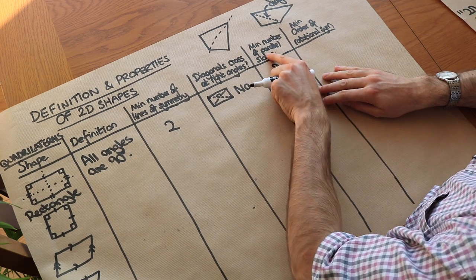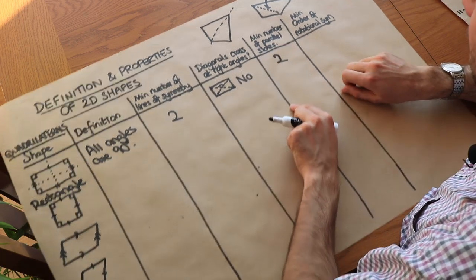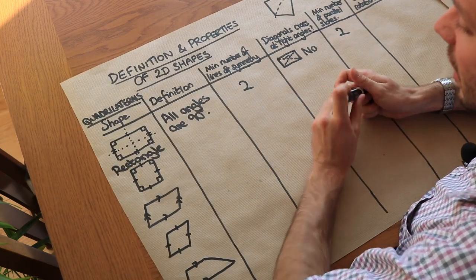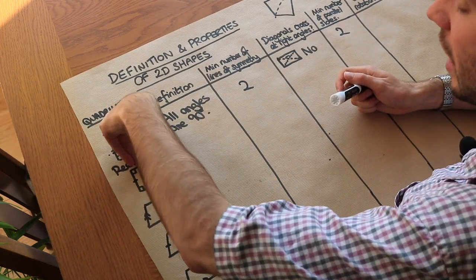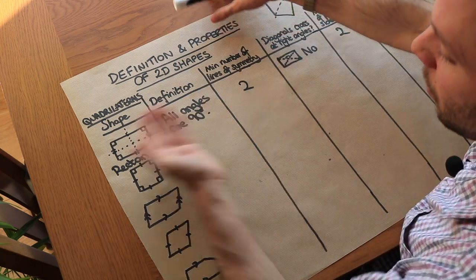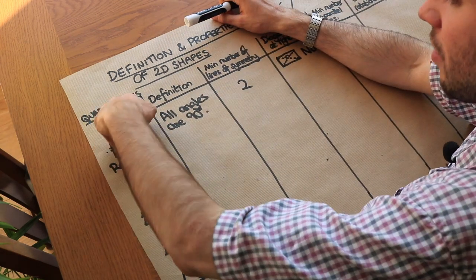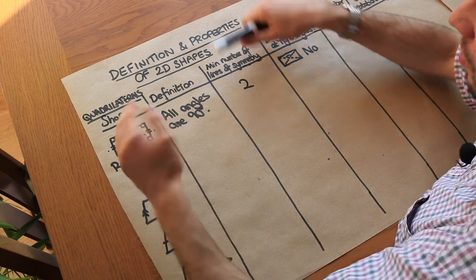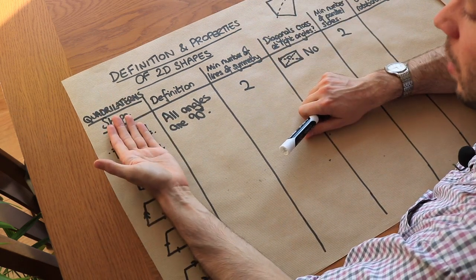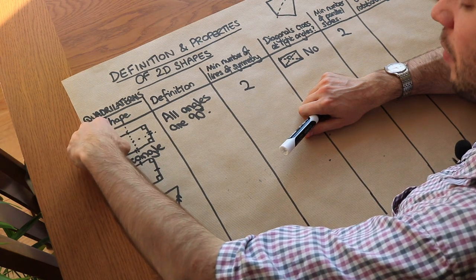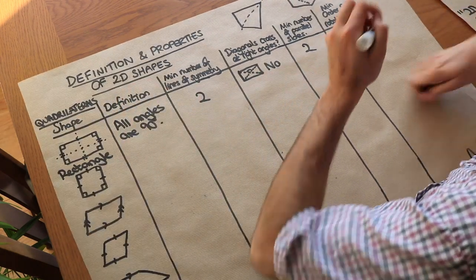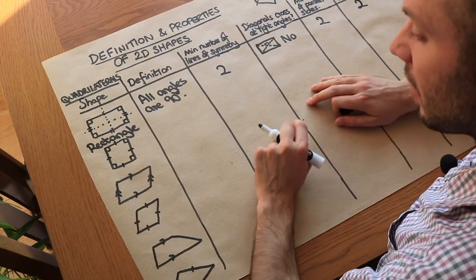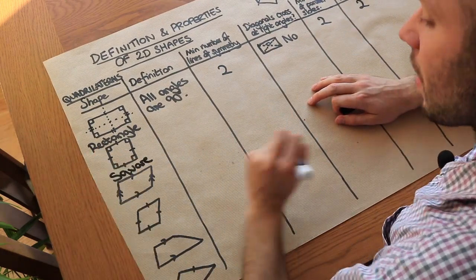Rotational symmetry is how many times you can rotate the shape and see the same shape. For a rectangle, the original position counts as one, and rotating it 180 degrees gives the same shape again, so its rotational symmetry is of order two.